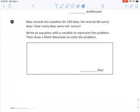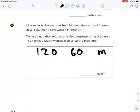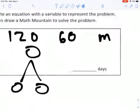Number four, Max records the weather for 120 days. He records 60, 70 days. How many days were not sunny? Write an equation with a variable to represent the problem, then draw a math mountain. So remember, you're going to need to use the numbers 120, 60, and some kind of a variable. Maybe you want to use M. Then you're going to do a math mountain. So just remember the parts of a math mountain. And then you also have to solve it by telling how many days right there.